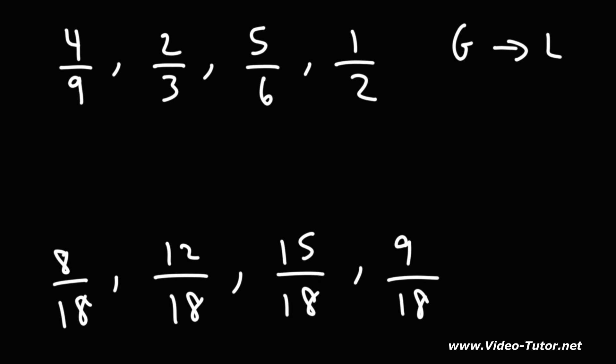So now that I have common denominators, I can now look at the numerators to compare the fractions. So 8 is the lowest of 12, 15, and 9.